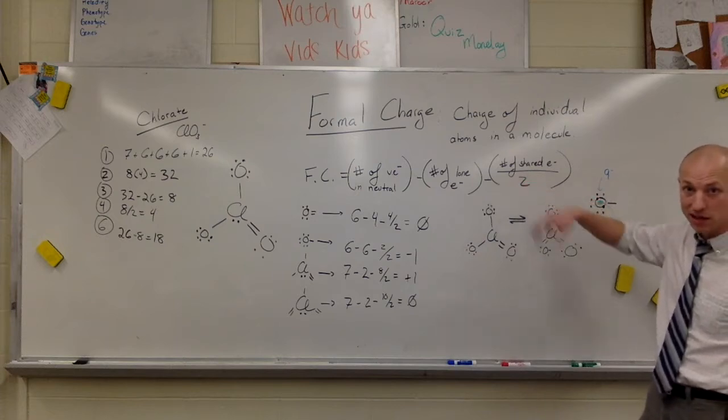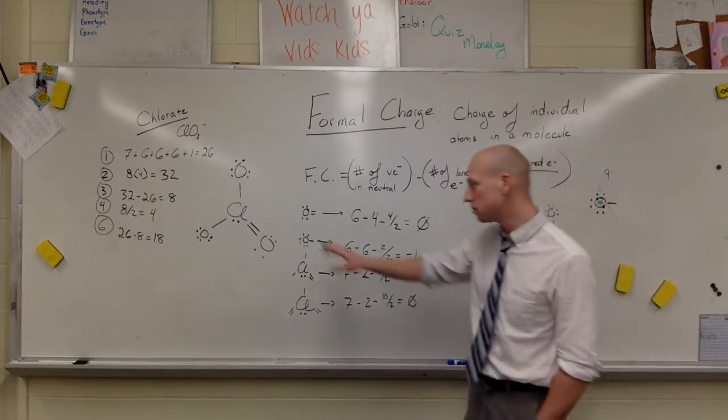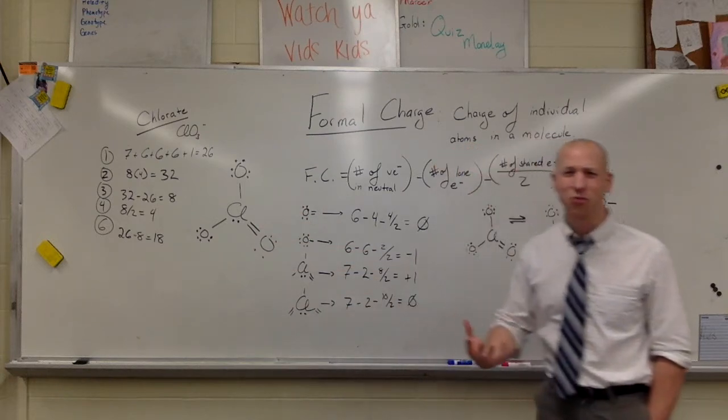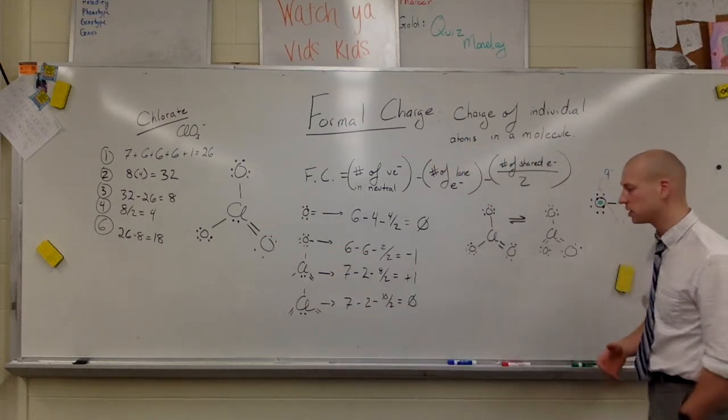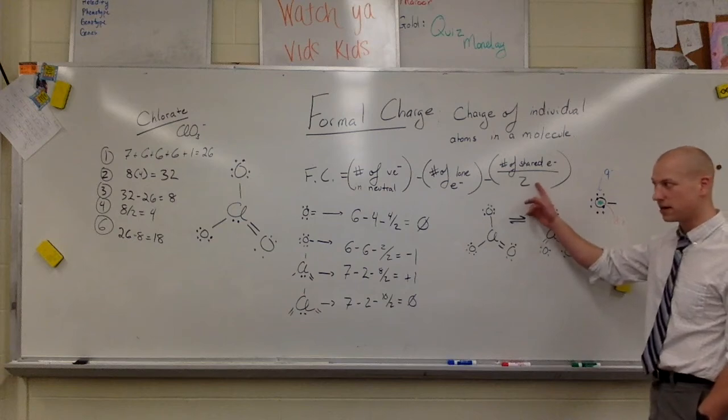The number of lone electrons and then half the number of shared electrons. Half the number of shared electrons because they're shared. Half the time they'll be over by oxygen, half the time they'll be over by chlorine. So we can't really dictate whether or not they're going to be in one place or the other. So we have to divide this by one half.